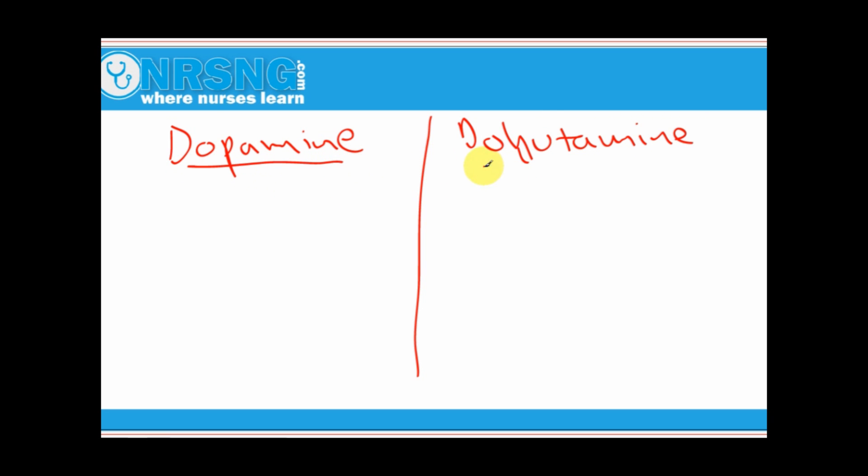So let's talk dopamine versus dobutamine. First of all, we need to understand that dopamine is a vasopressor. Dobutamine is not a vasopressor. Dopamine is actually an alpha-1 adrenergic agonist.